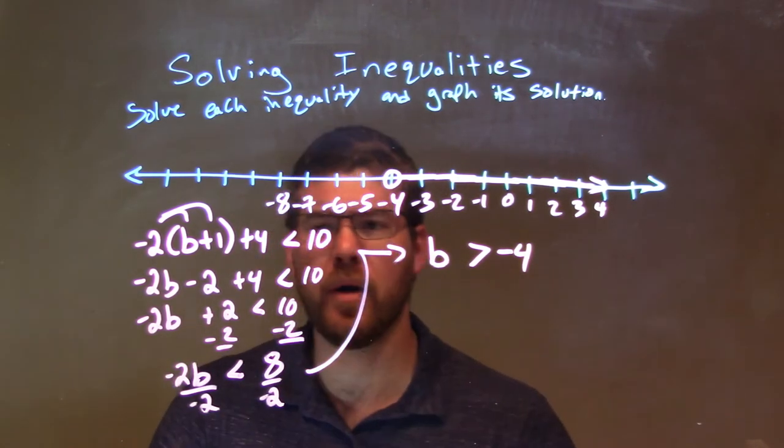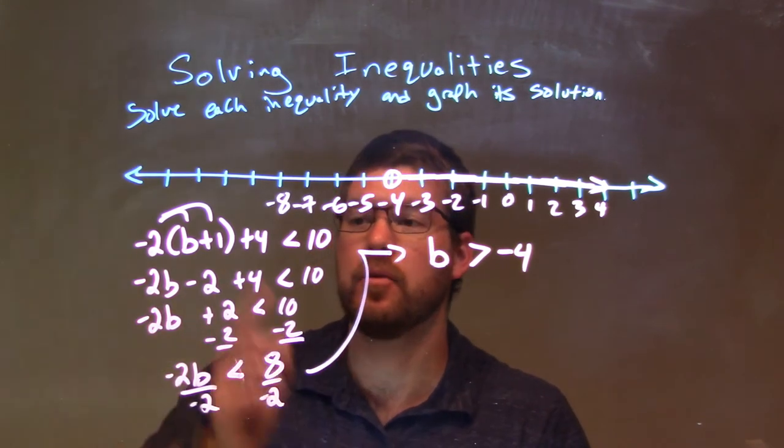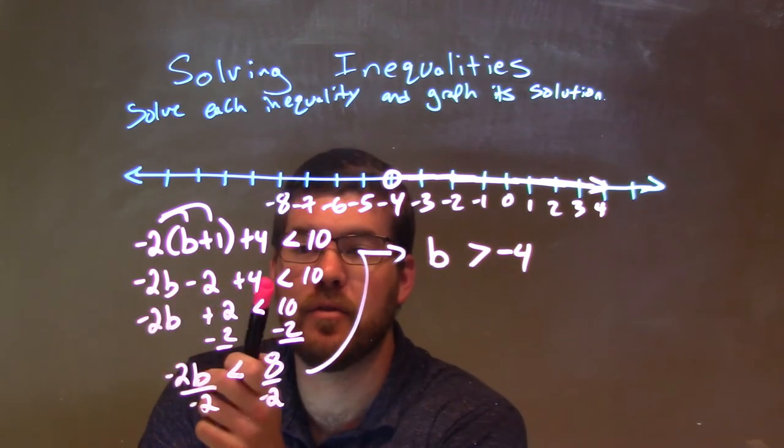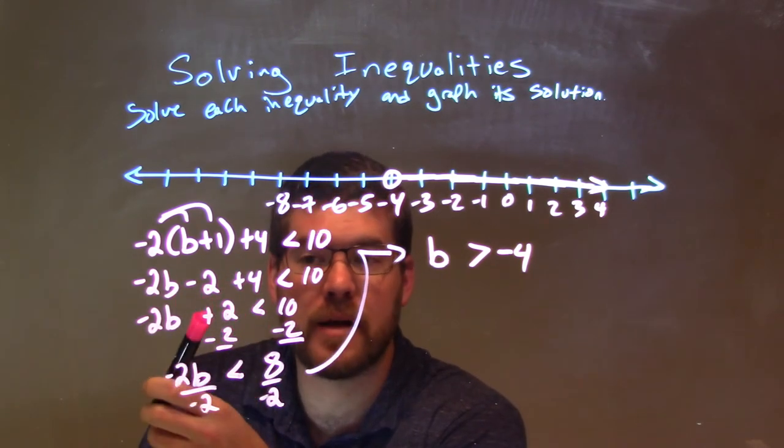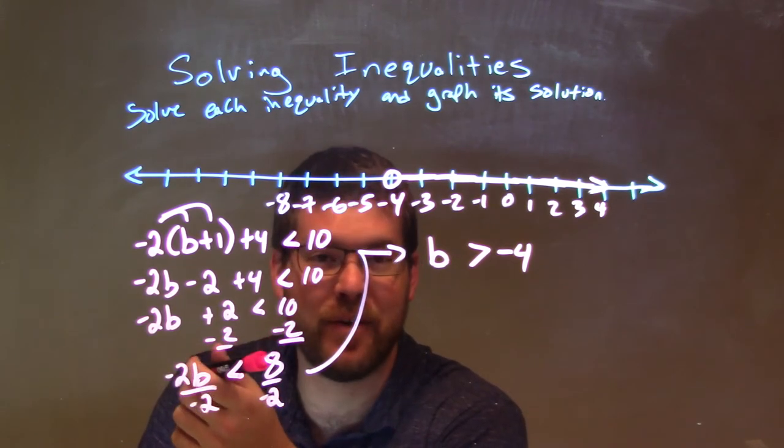So, as we saw, negative 2 times (b plus 1) plus 4 is less than 10. I distribute the negative 2 across, giving me negative 2b minus 2. Then I add the negative 2 and the 4 to get positive 2. Subtract that 2 from both sides. 10 minus 2 is just positive 8.